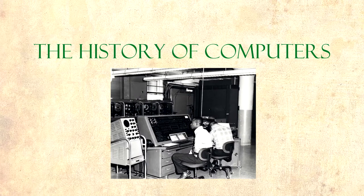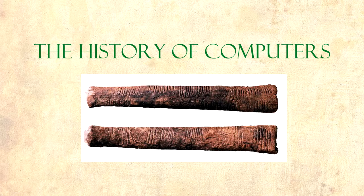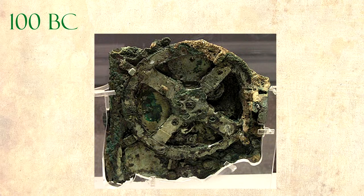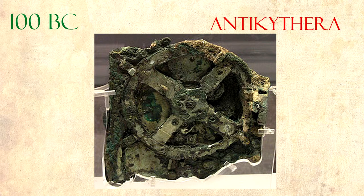The history of computers goes further back than you might think. Devices to help people with computation have been around for thousands of years. The first ever true mechanical analog computer was created during Roman times, around 100 BC. It was named the Antikythera mechanism and it was found in 1901. Roman astronomers used it to calculate astronomical positions. Devices with such a high level of complexity would not reappear until a thousand years later.